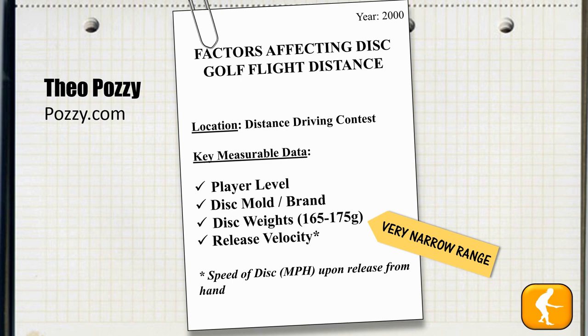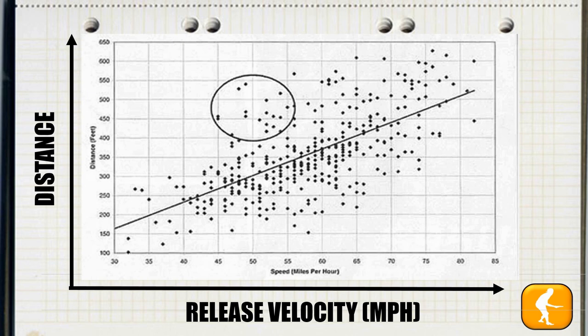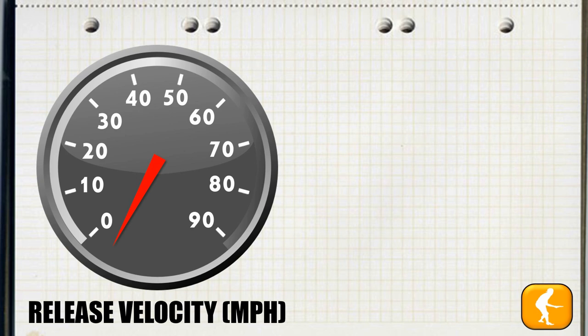Unfortunately during this study the range of disc weights was very narrow, only 165 to 175 grams. But what we're most interested in is the release velocity data, which he captured with a radar gun for every throw conducted. This chart shows the actual mapping of his data. Along one axis you can see the distance in feet, along the other axis you can see the release velocity of that throw, and it's clear that there's a very strong correlation between the release velocity speed and the ultimate distance that the disc flew.